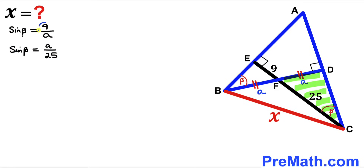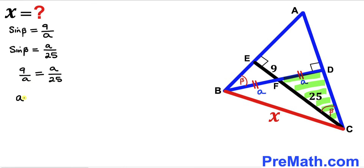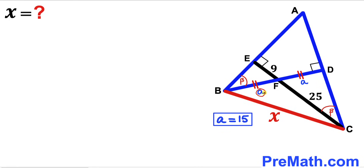Comparing these two equations: 9 divided by a equals a divided by 25. Cross-multiplying gives a squared equals 225. Taking the square root on both sides, our lowercase a value turns out to be 15 units. So both BF and FD equal 15.